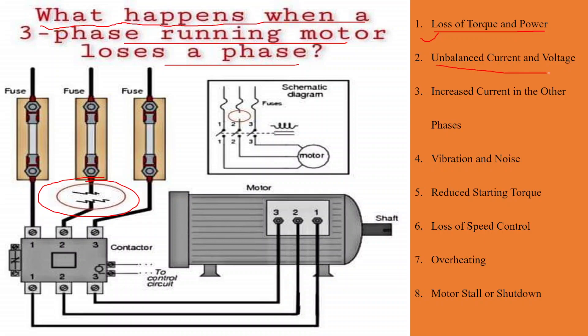Second, Unbalanced Current and Voltage. With the loss of one phase, the current and voltage in the remaining phases become unbalanced. The unbalanced current can cause overheating and potentially damage the motor windings. Unbalanced voltage can also affect the motor's efficiency and performance.